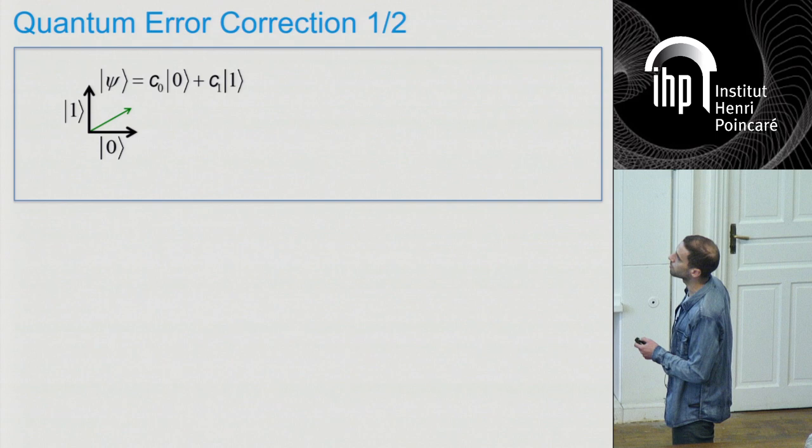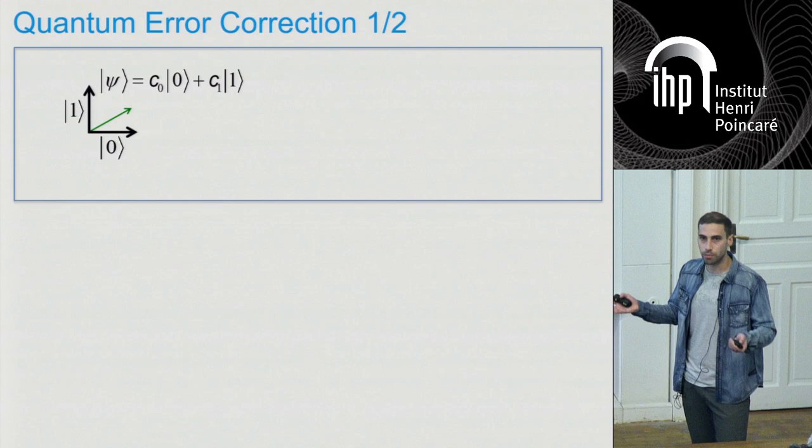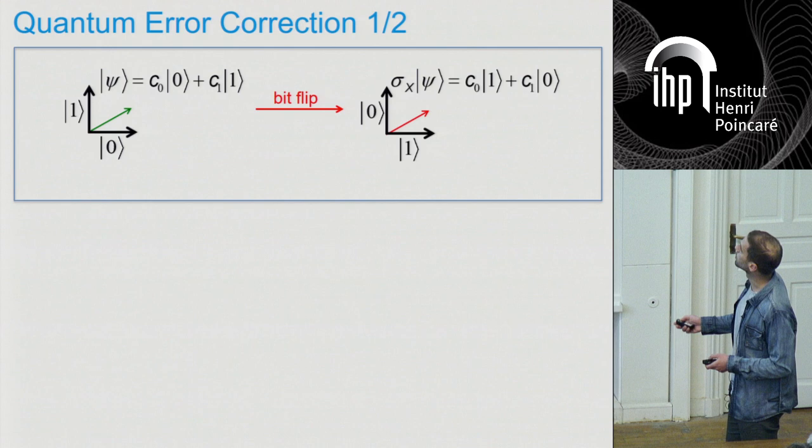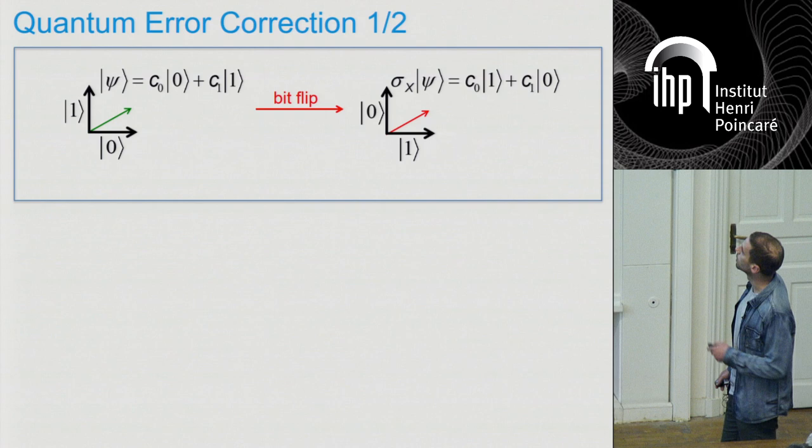Let's assume for simplicity that the only problem that can happen to my qubit is a bit flip error. A bit flip error means that 0 is transformed to 1 and 1 is transformed to 0, and this is done at a random time not controlled by the operator. So at some random time, a bit flip is going to occur and you're going to have your new state sigma x psi, where you see the 0 has been flipped to 1 and the 1 has been flipped to 0.